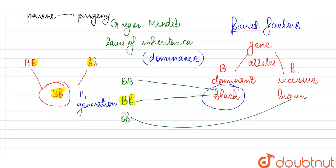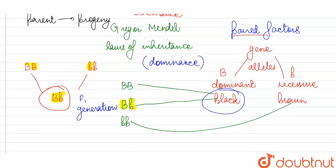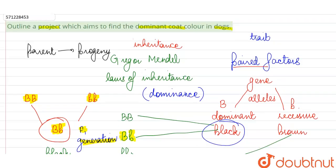By this, what can we determine by carrying out this project? We see when we are crossing pure black with pure brown, we are obtaining in the F1 generation all black colored progeny.